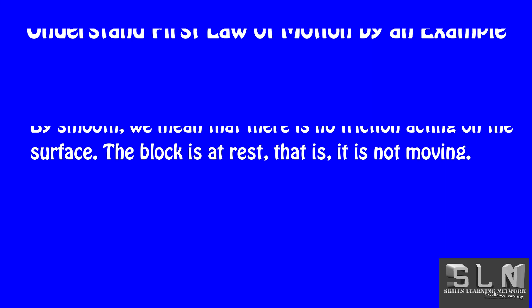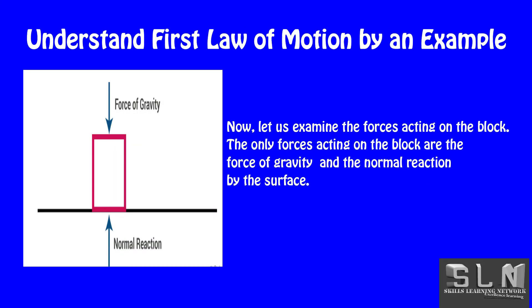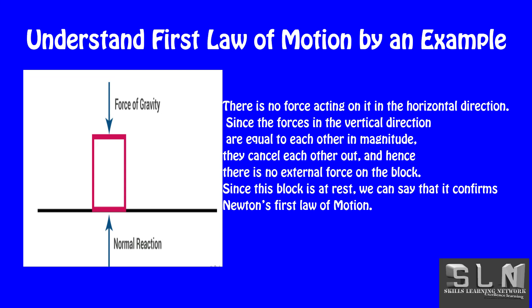Let us understand more about physical motion by example. Let us take a block on a smooth surface. By smooth, we mean that there is no friction acting on the surface. The block is at rest, that is, not moving. Now let us examine the forces acting on the block. The only forces acting on the block are the force of gravity and the normal reaction by the surface. There is no force acting on it in the horizontal direction. Since the forces in the vertical direction are equal to each other in magnitude, they cancel each other out, and hence there is no external force on the block.